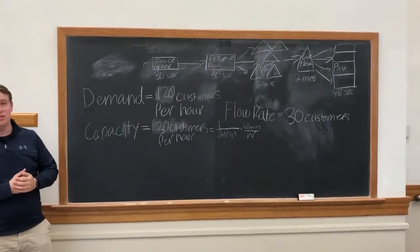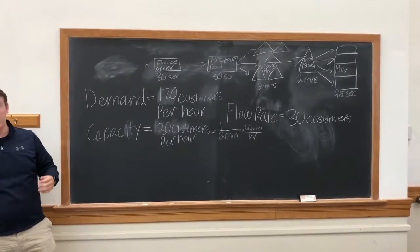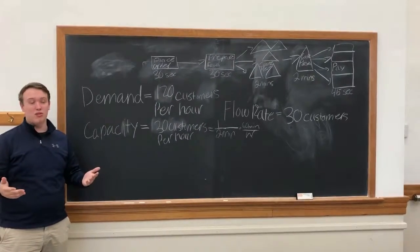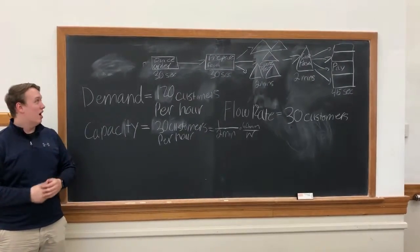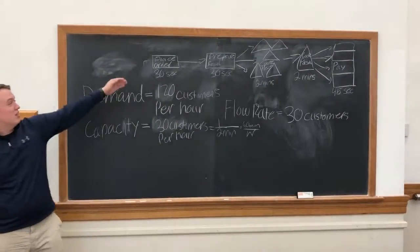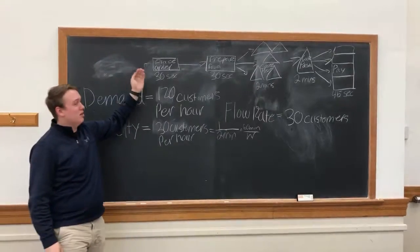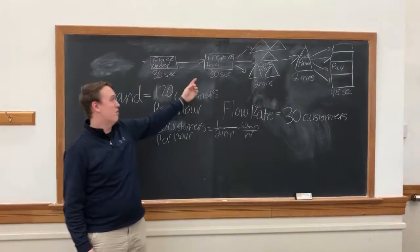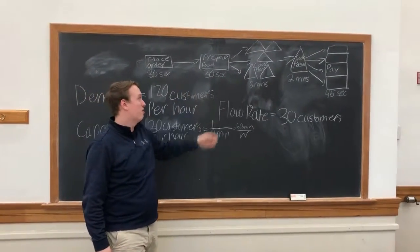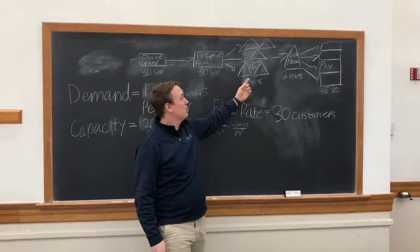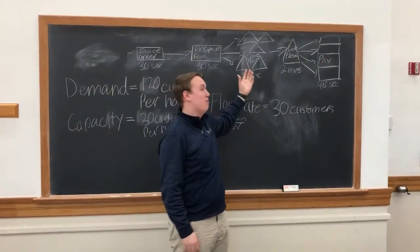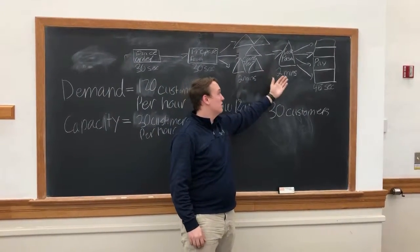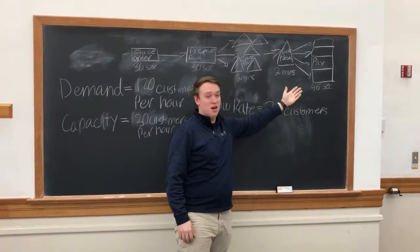This is the process flow diagram for a customer at the IMU River Room. The customer begins by placing an order, their food is then prepared by the staff, the meat is cooked, the pasta is cooked, and then they pay.